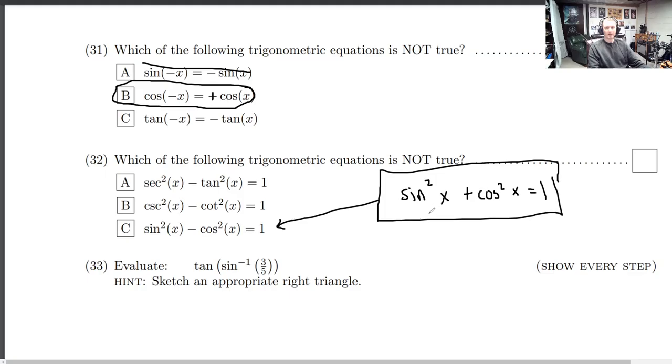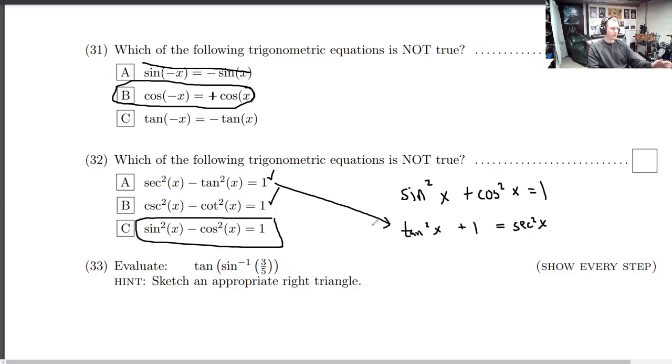If you divide everything here by sine of x, sine squared of x, you're going to get 1 plus cotangent squared of x equals cosecant squared of x. So that's dividing the Pythagorean by sine squared of x. And you'll notice that's the same as this one: cosecant squared minus cotangent squared equals 1. If you divide everything by cosine squared, you're going to get tangent squared of x plus 1 equals secant squared of x. And if you subtract over the tangent squared, you get that. So those are true, those are Pythagorean identities. And this one is not. So there you have it.